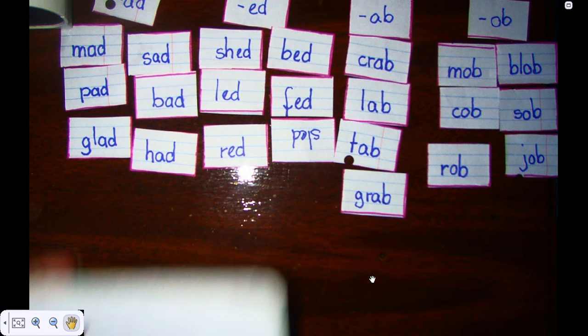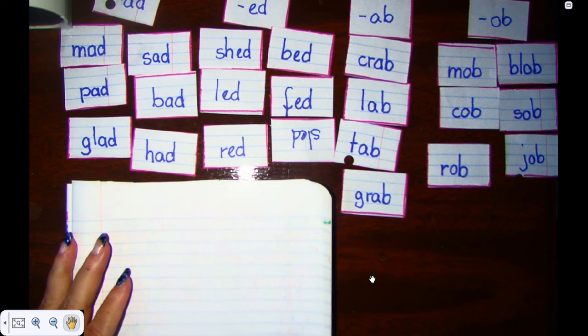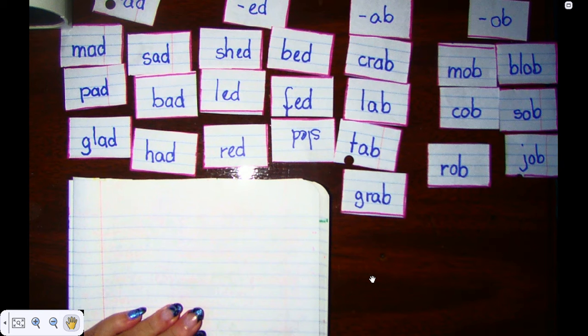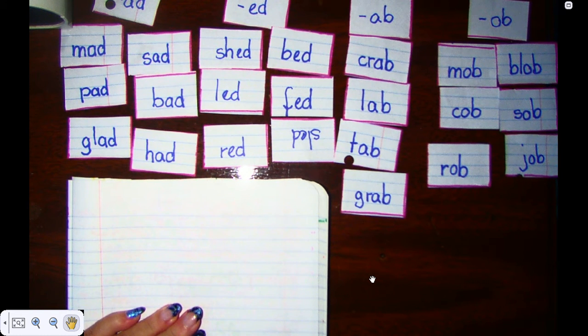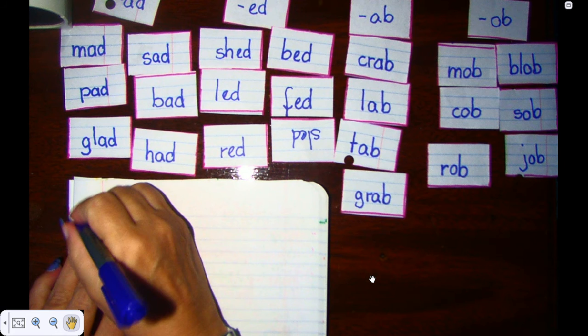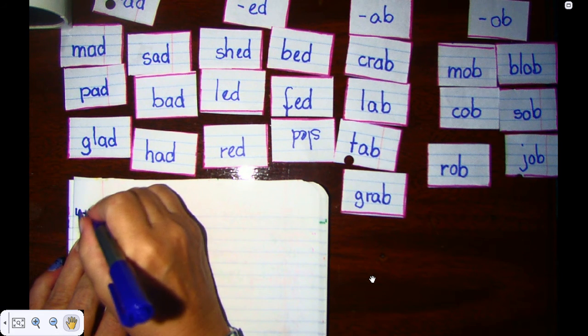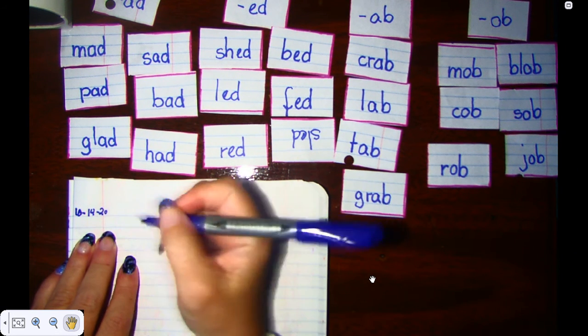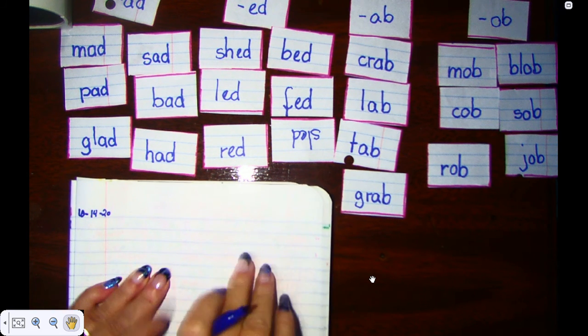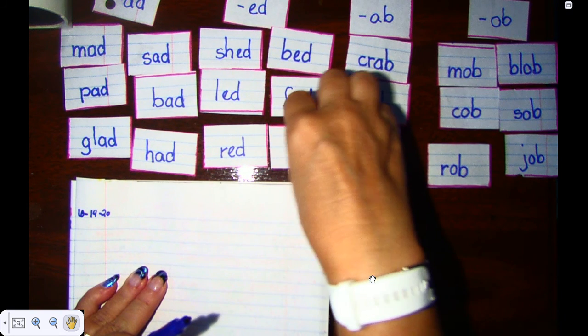So the first thing we do, remember, for the speed sort is we lay out our notebook and we set up our header. So let me start setting up my header. Today is 10-14-20. Your date, of course, is different, so write the date down that you have. And look, my word turned upside down.